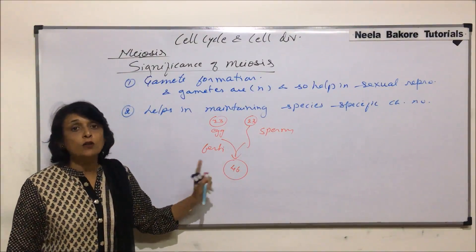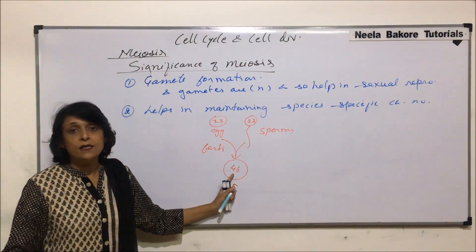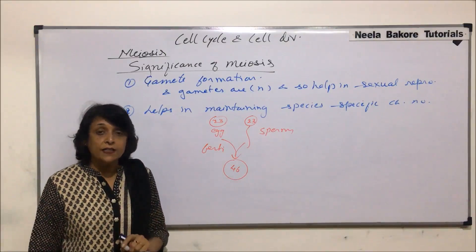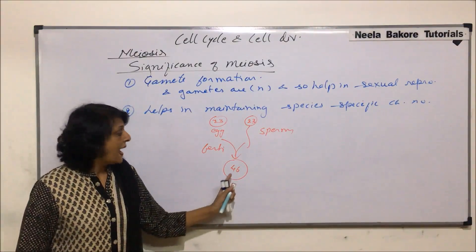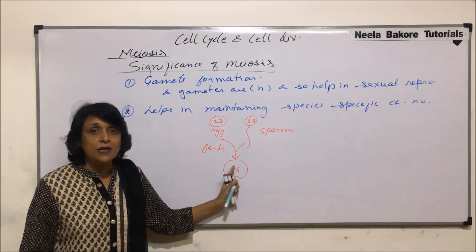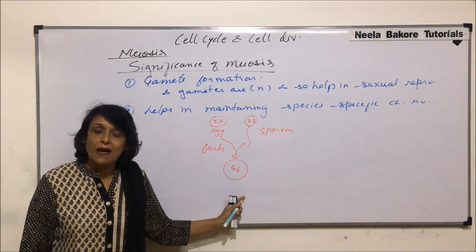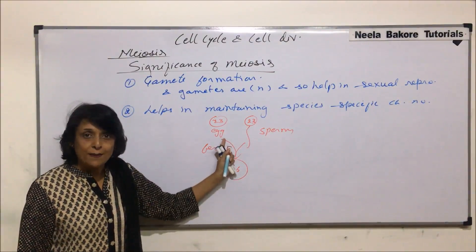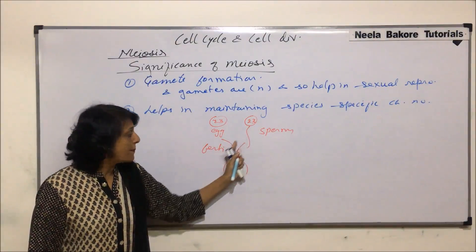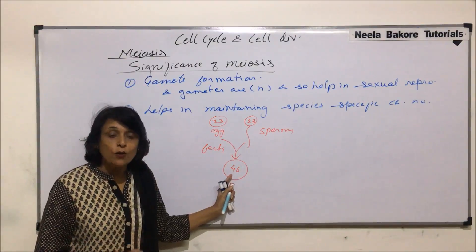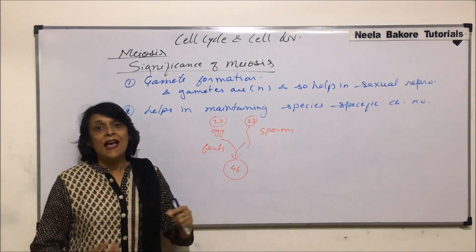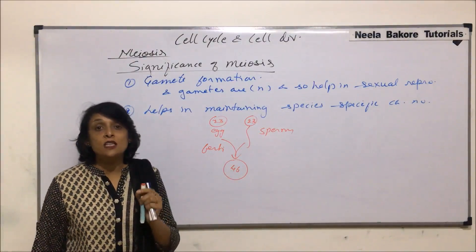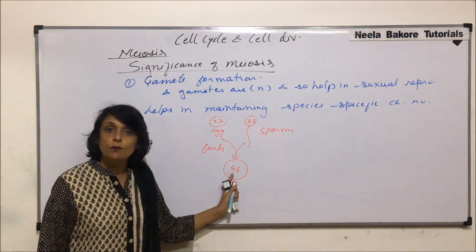These are the pairs which we call homologous pairs. Human beings have 46 chromosomes in all cells because the zygote undergoes mitotic divisions to form all the cells of our body. Mitotic division is equational division, so if a cell divides into two daughter cells, they are also going to have 46 chromosomes. So meiosis helps in formation of haploid gametes; these fuse to form a diploid zygote; the zygote undergoes mitotic division, and that is how all cells of our body are diploid — this is our species-specific chromosome number, 46 in the case of human beings.